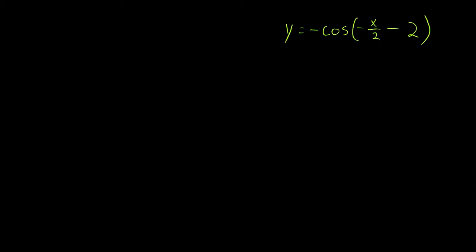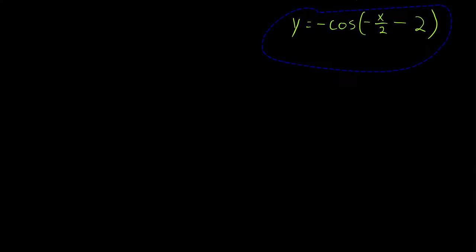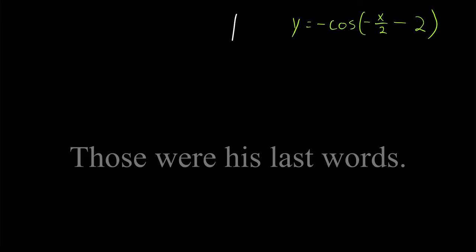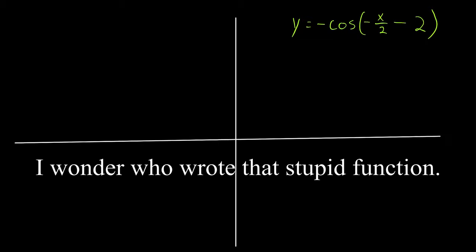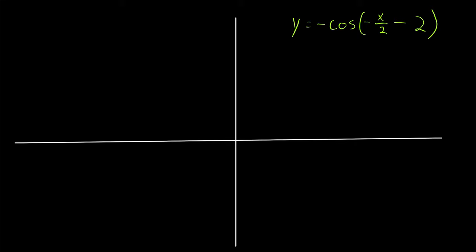Next example — a cosine function with what looks like a phase shift, though its exact value isn't immediately clear. Midline: no vertical shift, so y equals 0. For amplitude, checking the coefficient of x reveals it's negative, so we want to get rid of that. Inside the cosine function, factor out a negative 1, giving negative x over 2 plus 2. Because cosine is an even function, cosine of negative stuff equals cosine of that stuff, so the negative disappears. Our amplitude is negative 1.